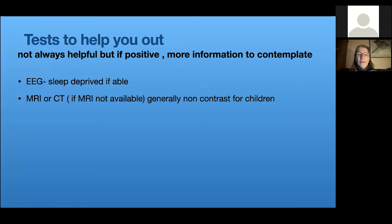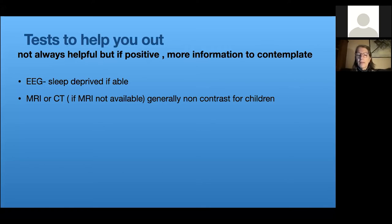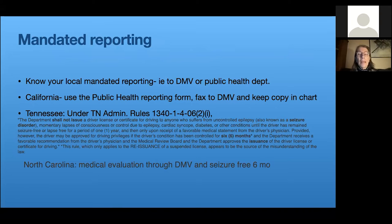MRIs are preferred over CT scans due to radiation exposure with CTs. Some kind of brain imaging is generally indicated if you don't know what type of seizure this was. For children, we generally look for a non-contrast scan — in adults the concern is more stroke or metastatic brain disease, so contrast is the place to start, but for kids we don't need contrast, which you can reassure the family about.